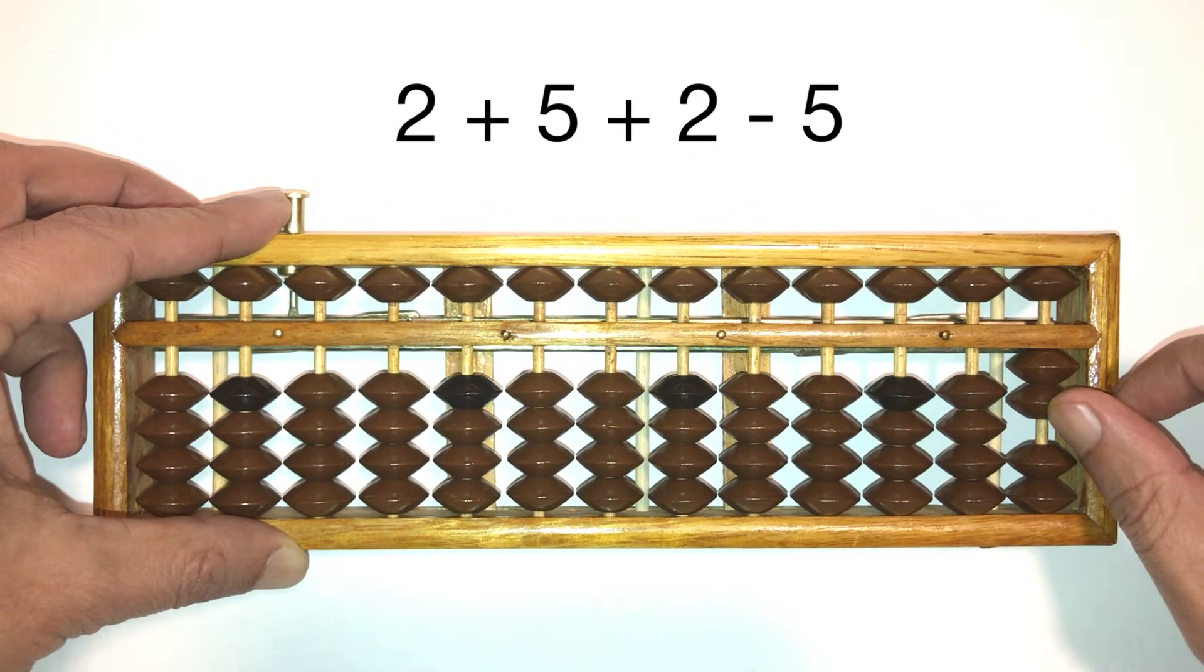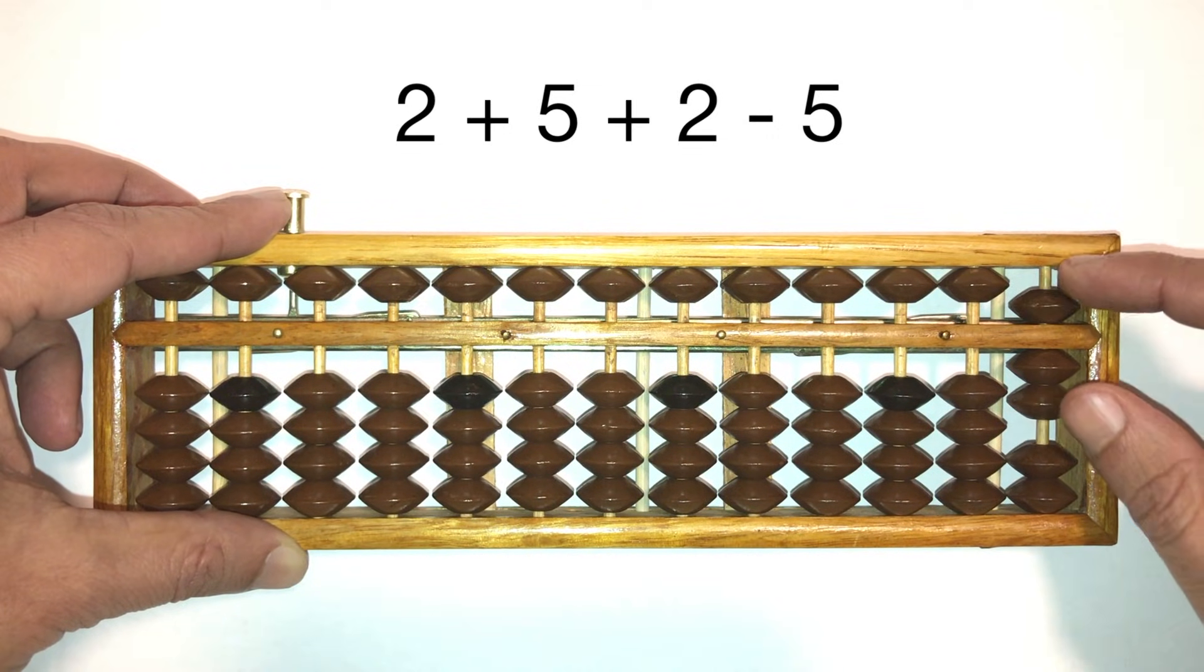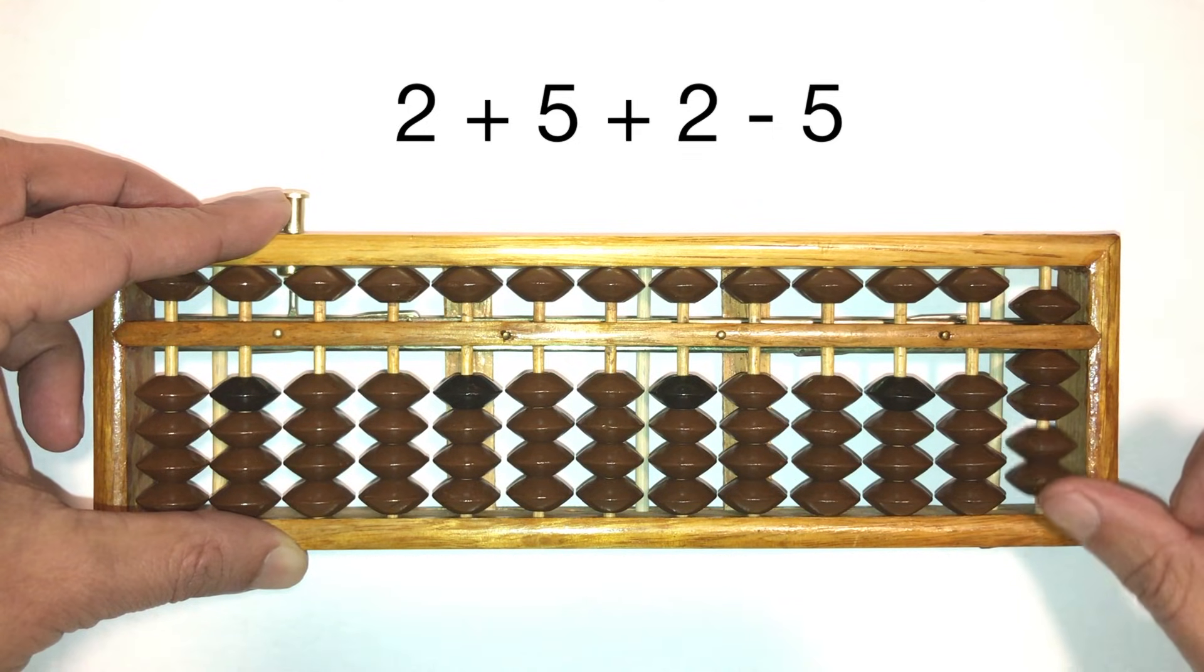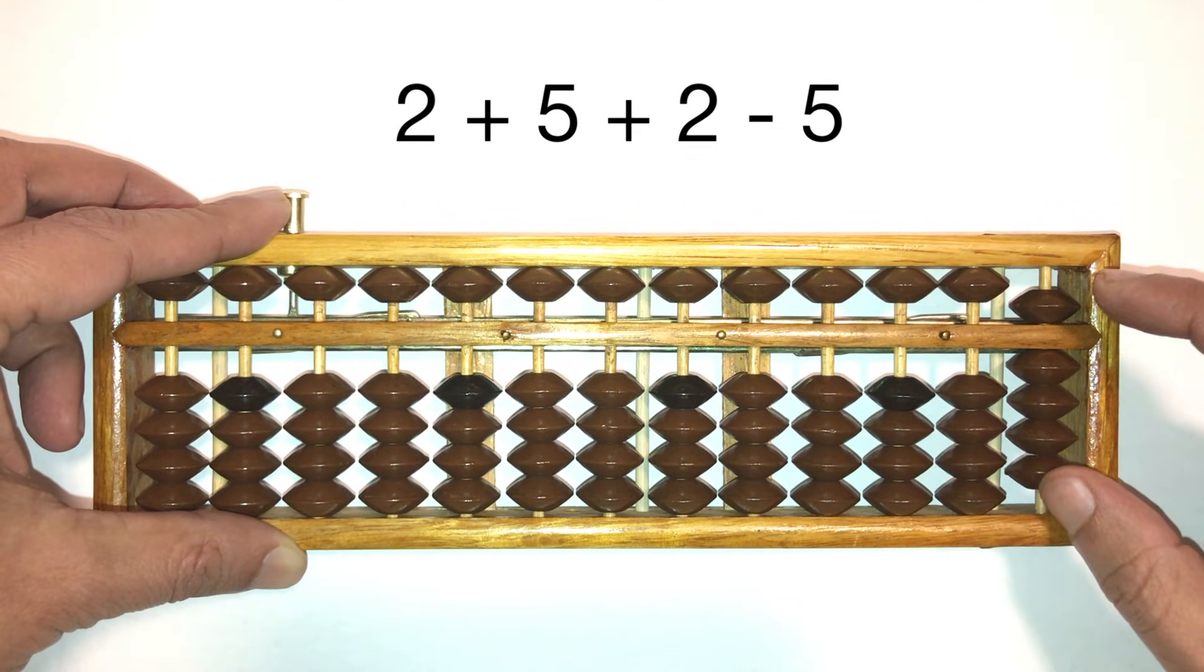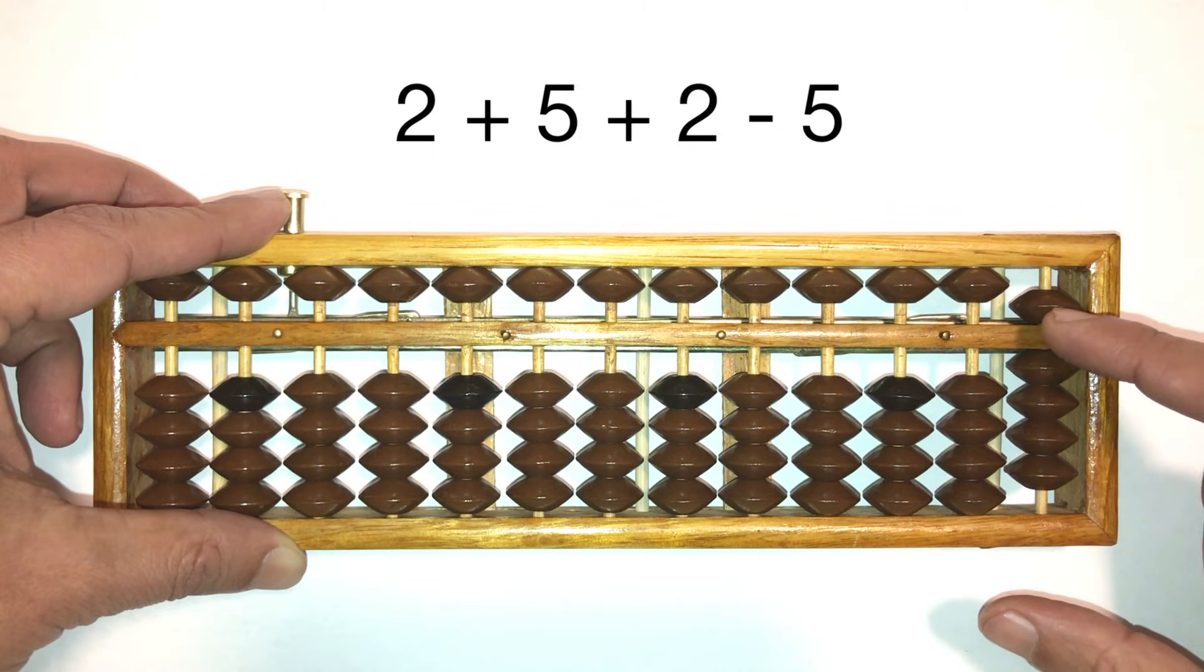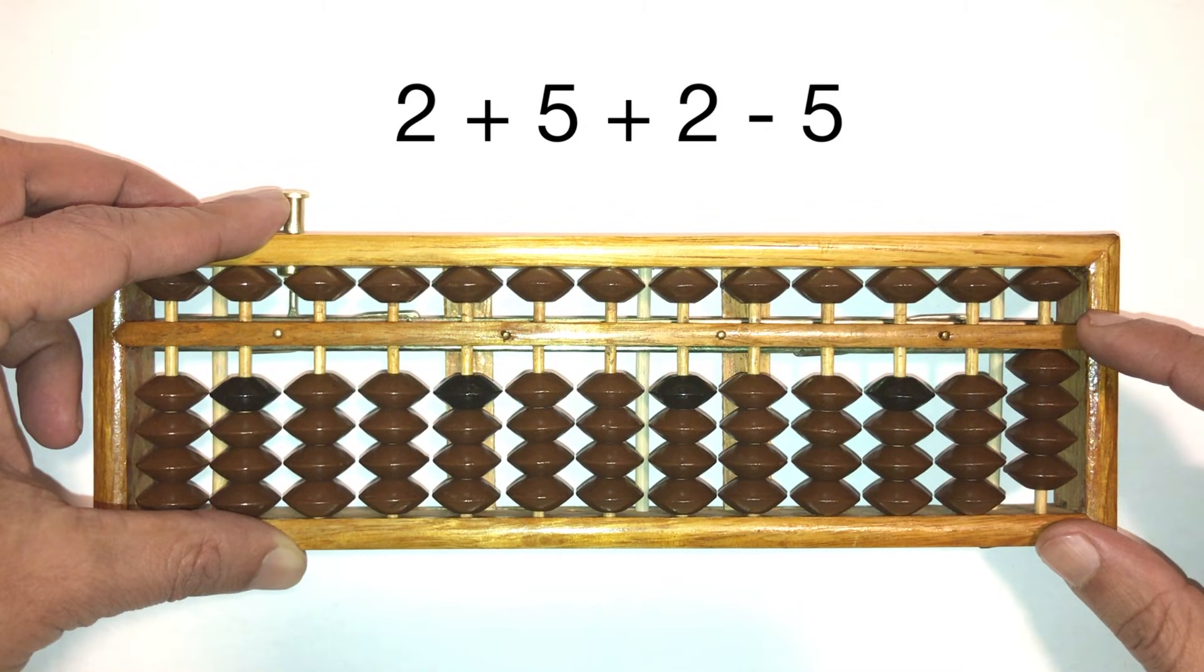2, we're moving it towards the answer bar because we're adding. Add 5, move it towards the answer bar again because we're adding. Plus 2, move them towards the answer bar. Minus 5, move it away or take away from the answer bar. The answer is 4.